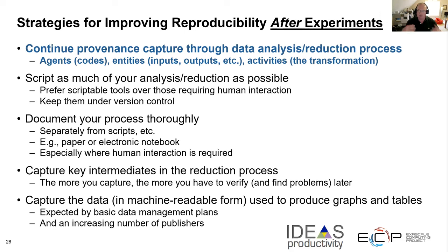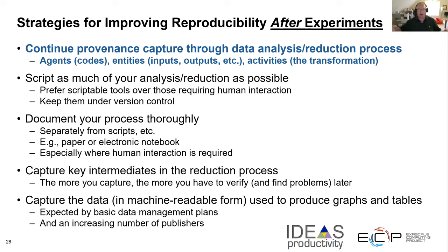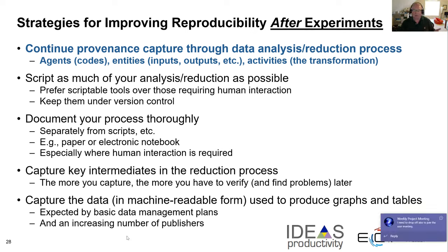After the experiments, during data analysis and reduction, continue to capture the provenance. One way to make this more systematic is to script as much as you can — use scriptable tools rather than those with GUIs that require human interaction, because GUI-based processes are harder to reproduce. Keep the scripts under version control. Document your process thoroughly. Capture key intermediates — don't just take the original data and process it all the way to the end without capturing intermediate steps. Look at them to make sure they make sense, and capture them so you can help reproduce if questions arise. Capture this data in machine-readable form; an increasing number of publishers are also expecting this.